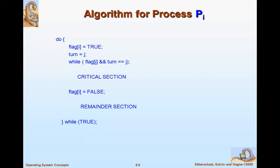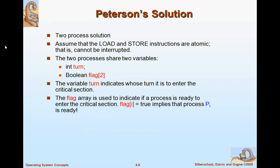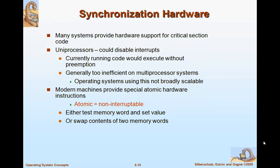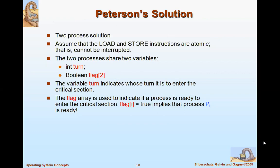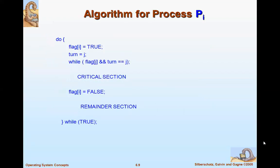This is the software-based solution also called Peterson's solution. Peterson's solution uses two variables: 'turn' and 'flag'. 'Turn' indicates whose turn it is; 'flag' indicates whether process Pi is ready — true means ready, false means not ready. This has been asked many times in exam papers. You should write about Peterson's solution, the variables, and the algorithm.